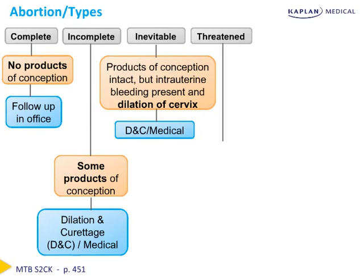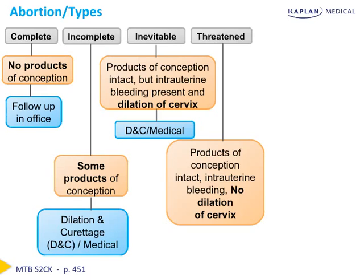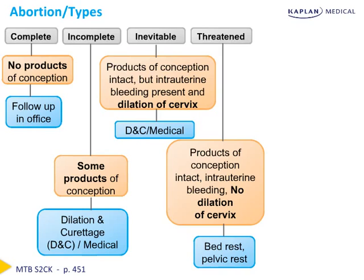Next, we have the threatened abortion. This presents as products of conception which are intact, with intrauterine bleeding present, but no dilation of the cervix. In this case, the option is watchful waiting — bed rest or pelvic rest — to see whether this will continue to evolve and become one of the other types of abortion, or will resolve and turn out to be a normal pregnancy.